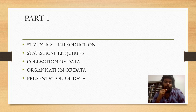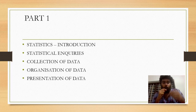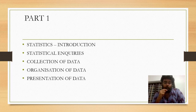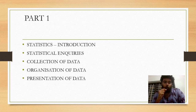The first chapter has 3 parts: Part 1, Part 2, and Part 3. We will discuss Part 1 first. Part 1 has a few topics: Statistical Introduction, Statistical Enquiries, Collection of Data, Organization of Data, and Presentation of Data. Those are the important terms.